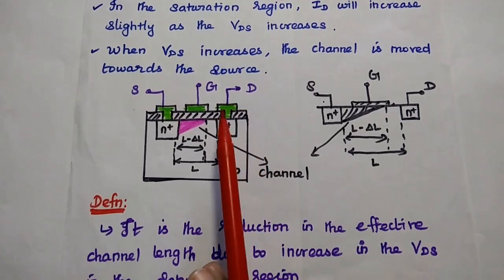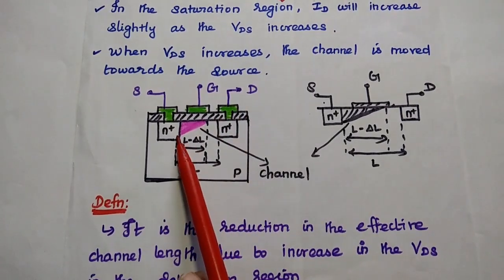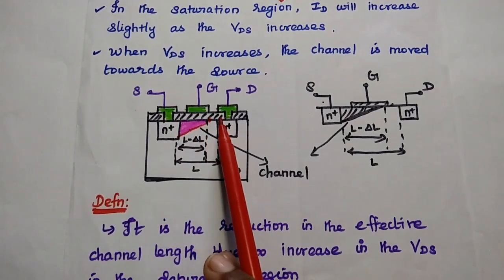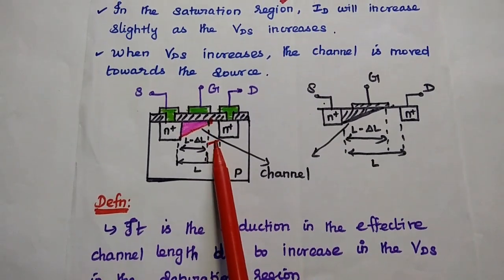VDS increase causes the channel to pinch-off at the drain. This distance is del n.